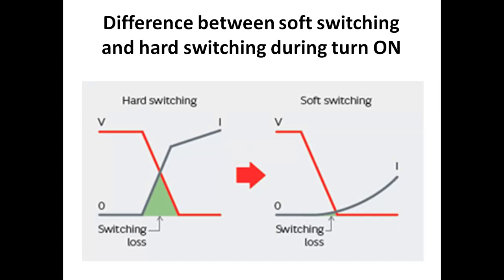In soft switching, we wait for the voltage to come to zero. After the voltage across the device comes to zero, we turn on the device. This we call it as soft switching. During switching, if any one becomes zero, power loss becomes zero.